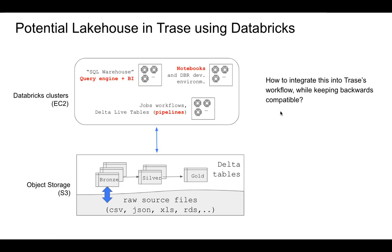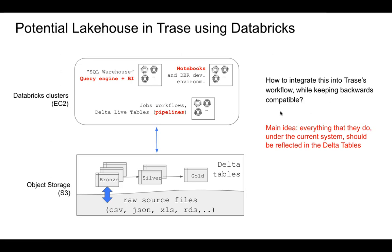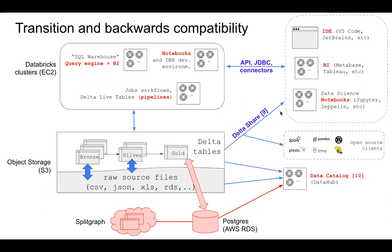They can define declarative pipelines integrating data quality checks throughout the whole process. A big question — not only for Trace but in general — is how to integrate this while keeping backwards compatibility. The main idea is that everything done on their current system should be reflected in the DeltaTables. A large part of the work was testing this out — ensuring everything in their CSVs and databases could be synchronized.